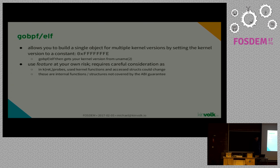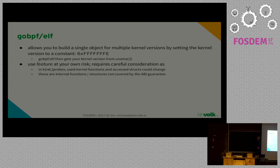A nice — or tricky — feature of GoBPF ELF is that you can create your program for multiple kernel versions. Usually you have to tell the kernel for which version the program was written, and the kernel only accepts a program written exactly for the running version. This can be tricky with patch releases — you may not want to recompile. We built in a feature: when you set it to a particular constant, GoBPF will try to guess the current kernel version at runtime and tell the kernel it was built for that version. It can be tricky because kernel structures and functions can change, so you should know what you rely on.